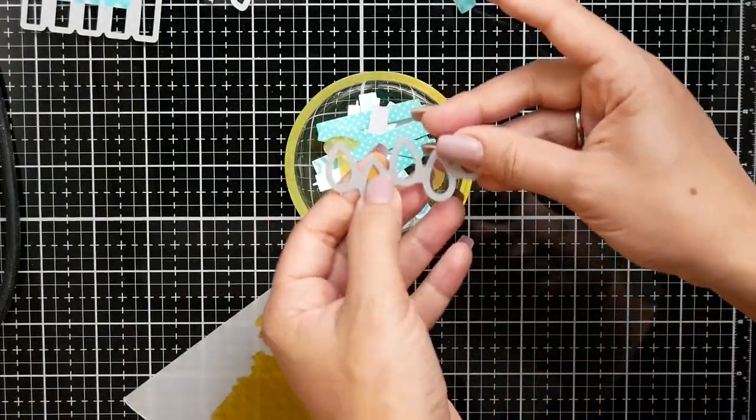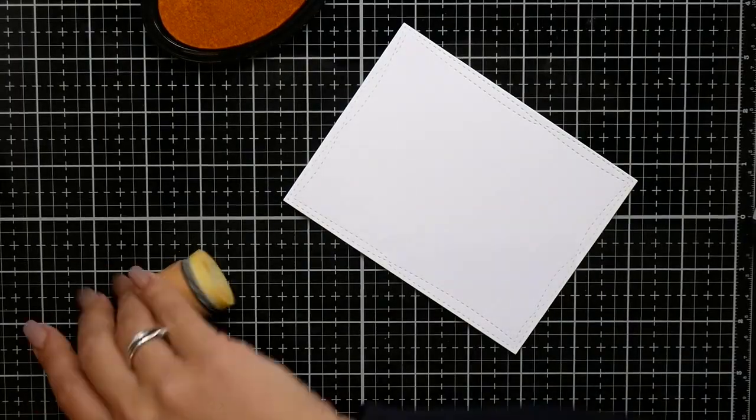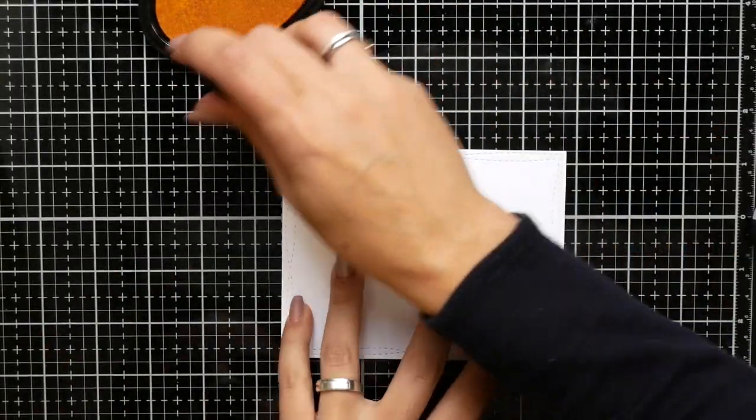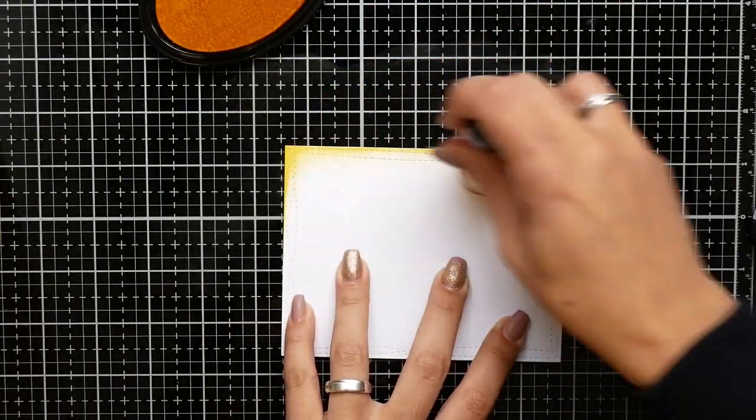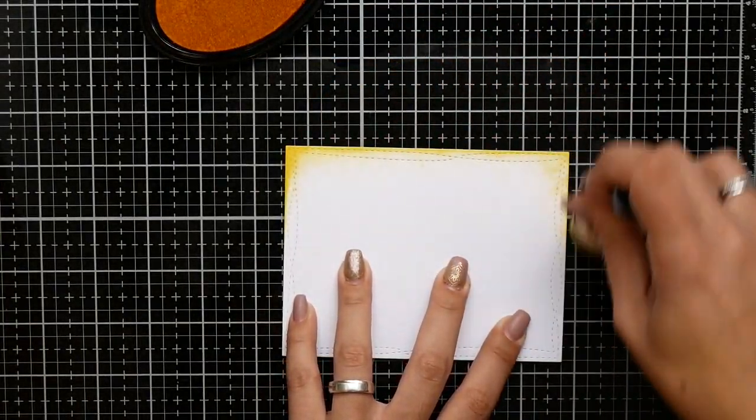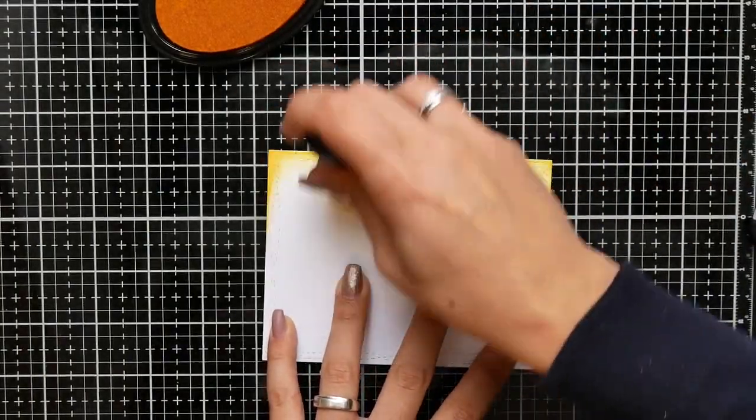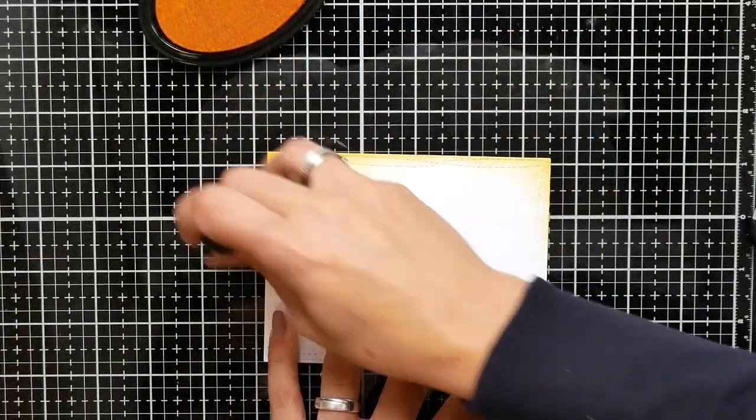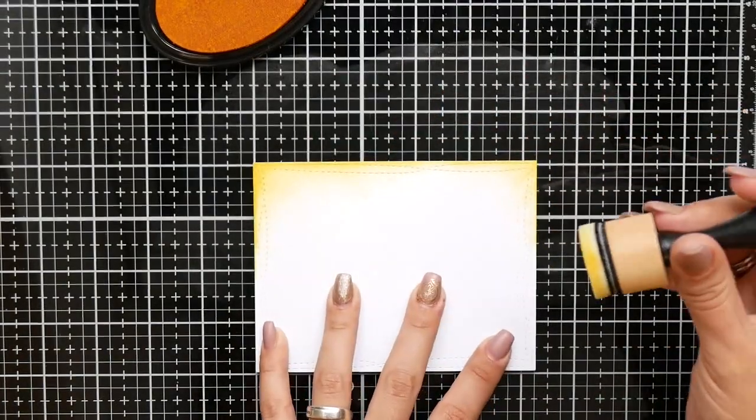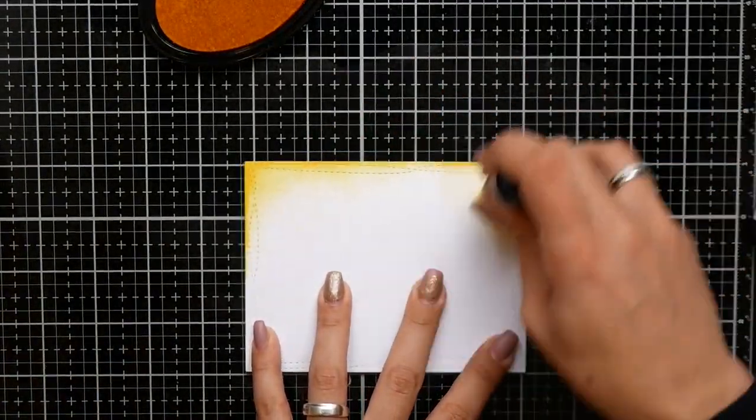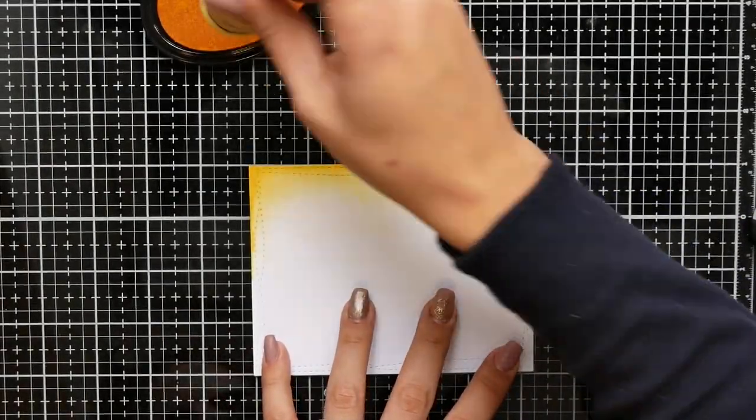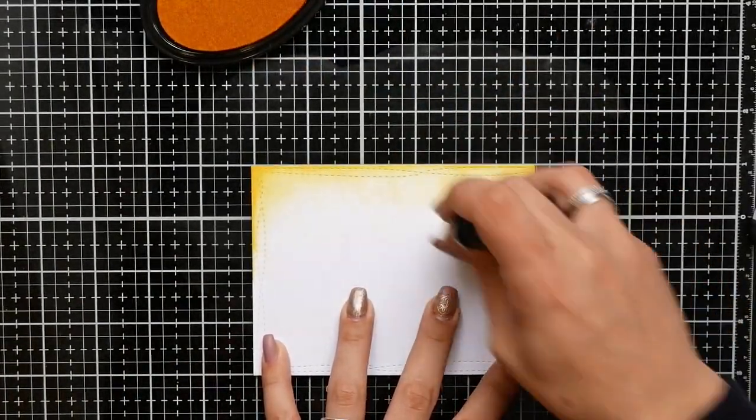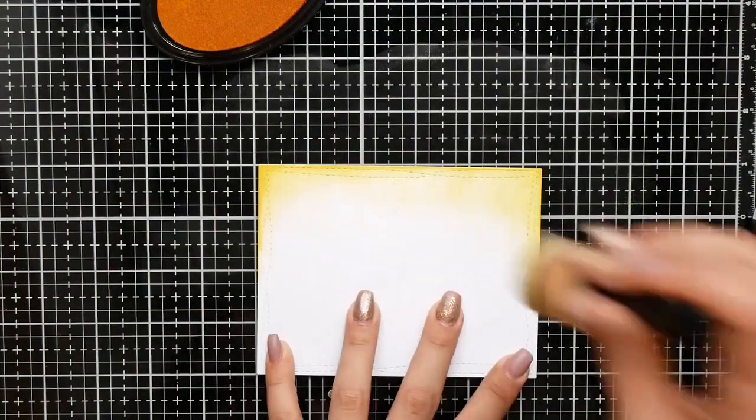For my background I'm ink blending with some distress ink and some inks from Crafters Companion. They are new and I really like them, but I don't have that many colors so I have to use my distress inks also.